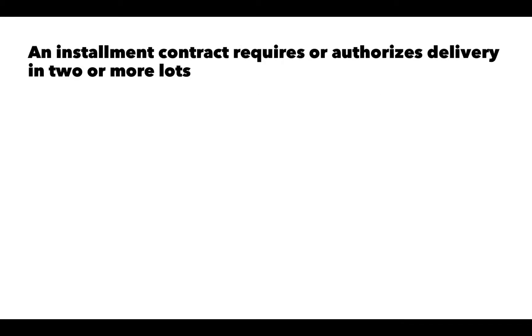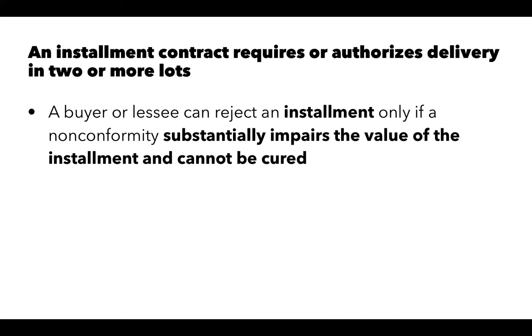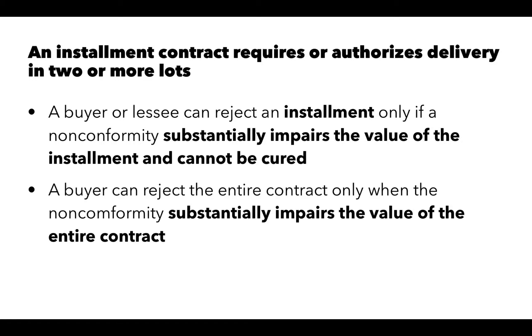An installment contract requires or authorizes delivery in two or more lots — it's a contract performed in part and then in part again. A buyer can reject an installment only if a non-conformity substantially impairs the value of that installment and cannot be cured. A buyer can reject the entire contract only when the non-conformity substantially impairs the value of the entire contract.